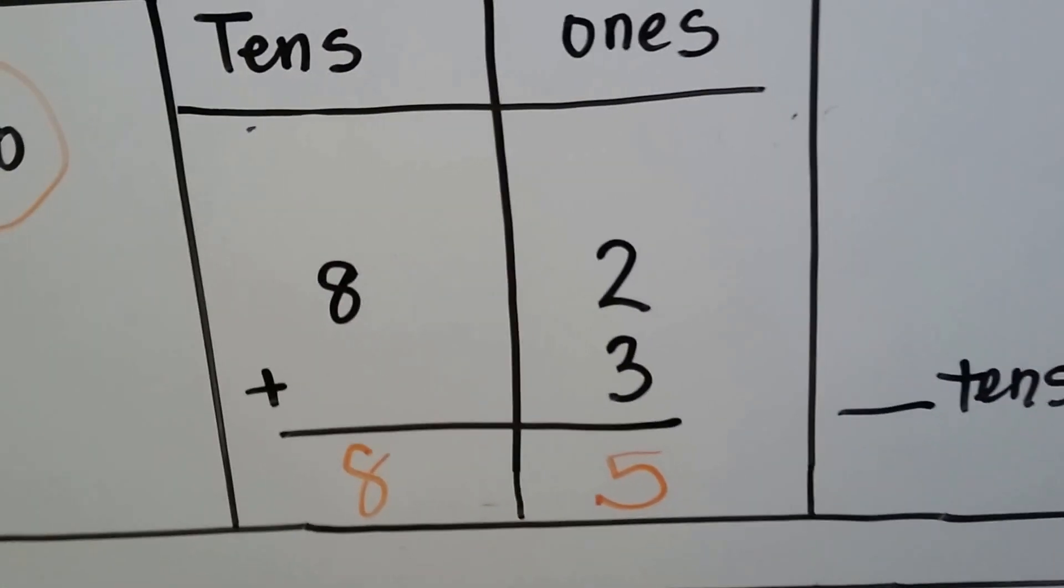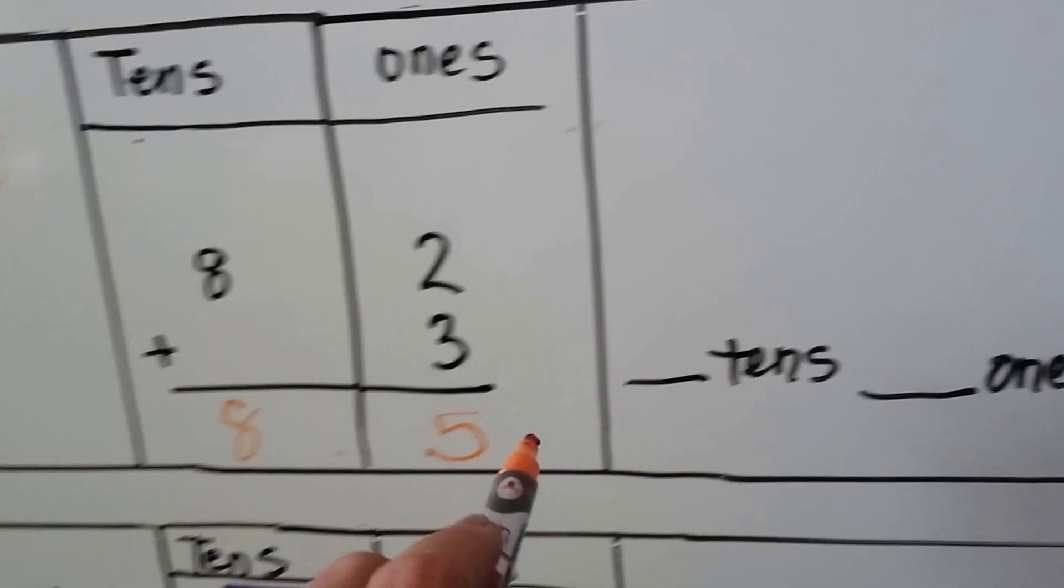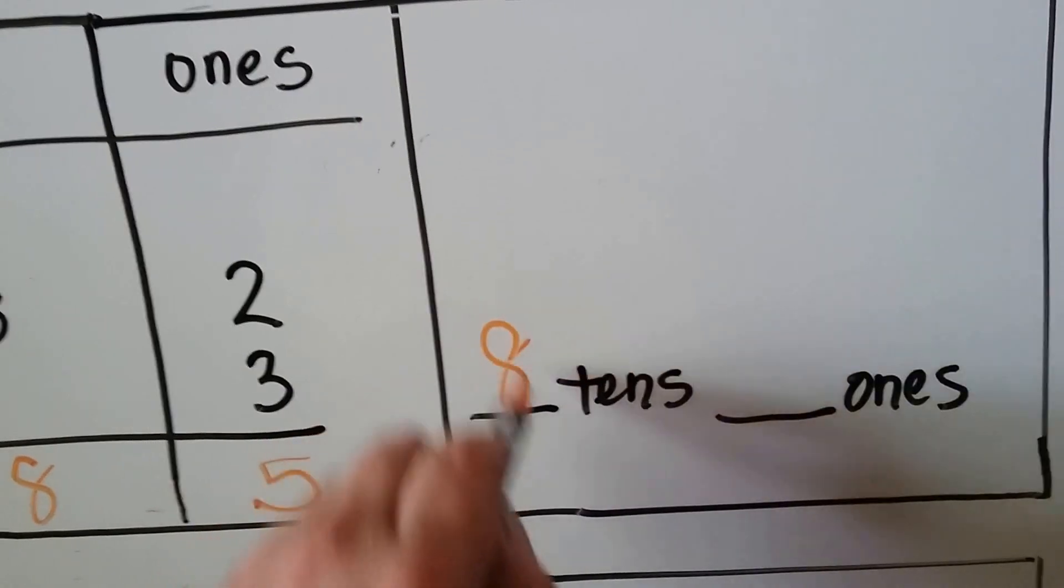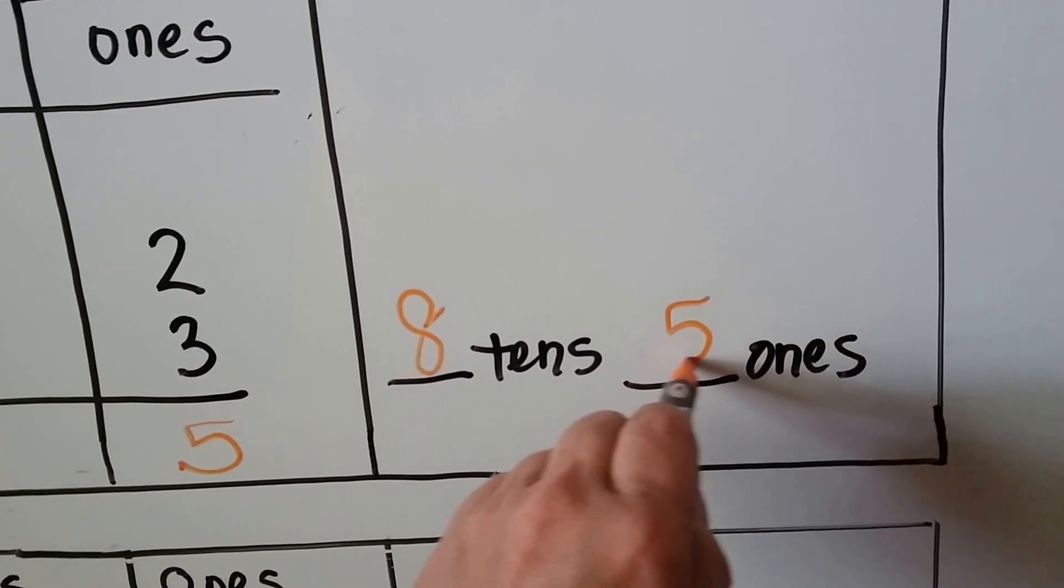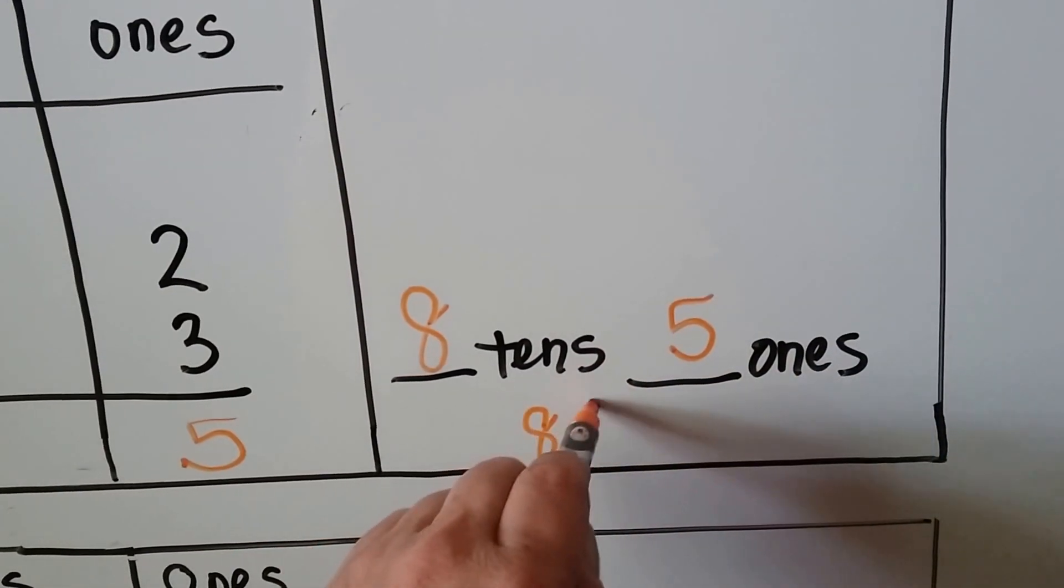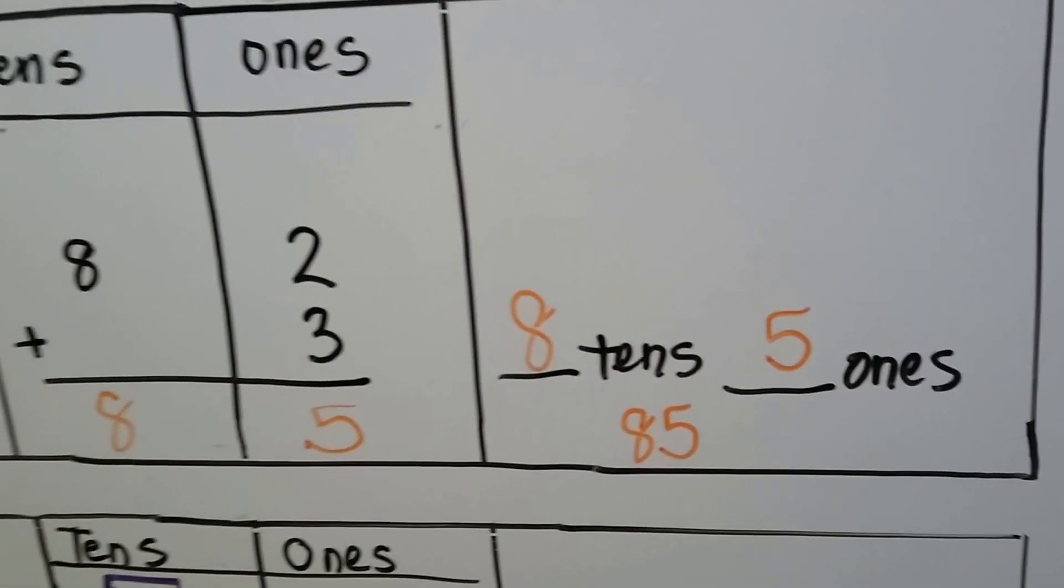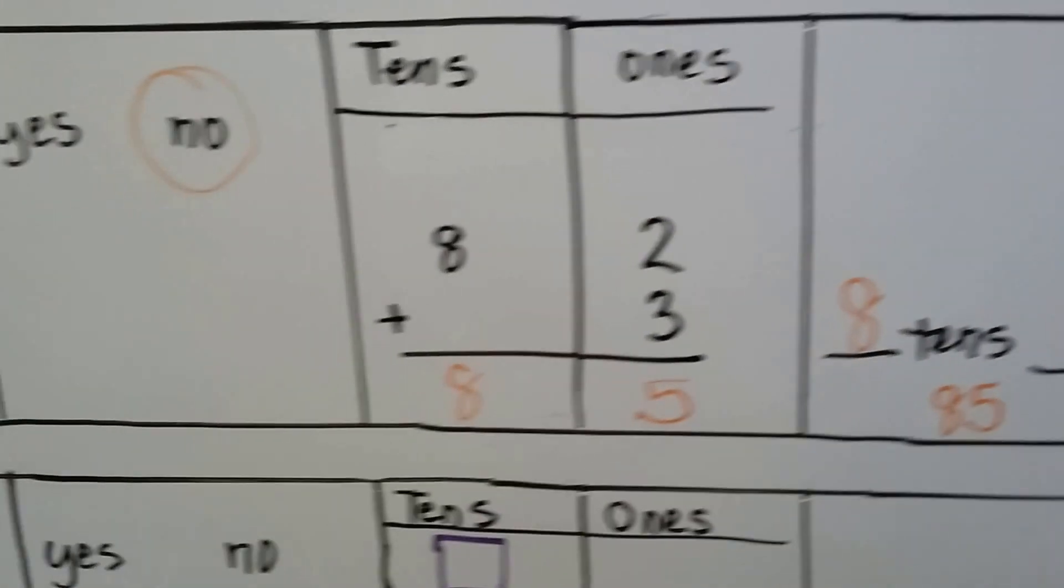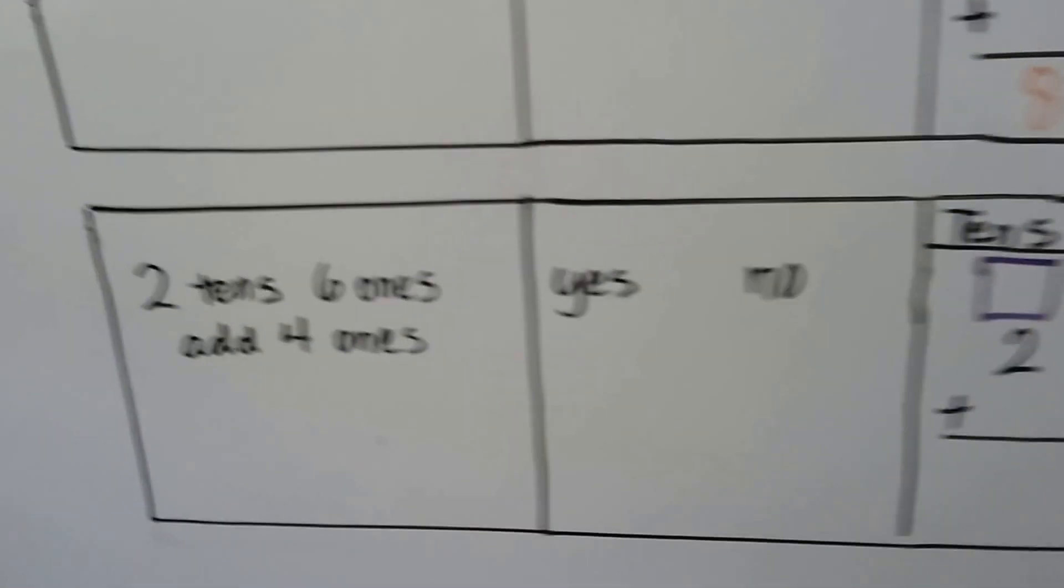See? So we have 8 tens and 5 ones. We had 85. We didn't have to regroup. We didn't have enough ones.